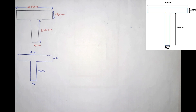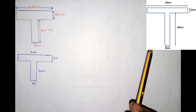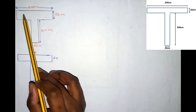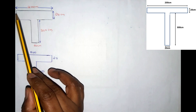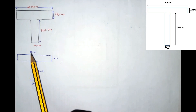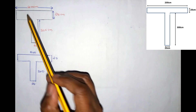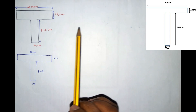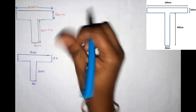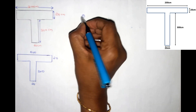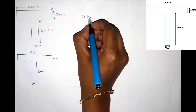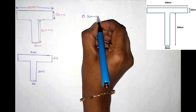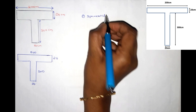The first problem is we need to know how to do it. It's a T-section. We need to know the centroid. We need to know how many of these equations are symmetric.